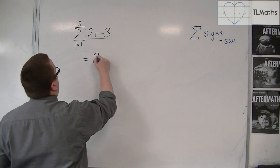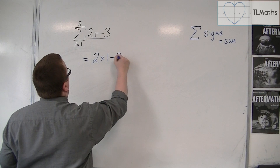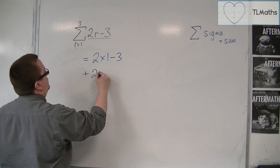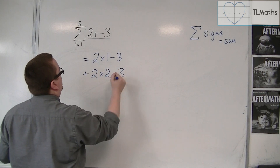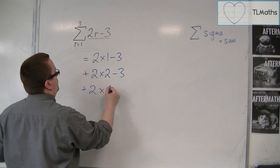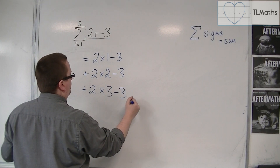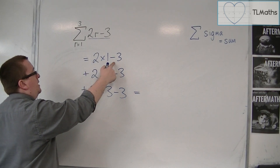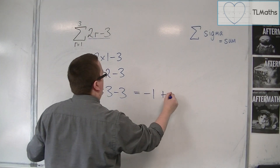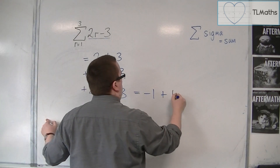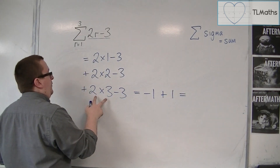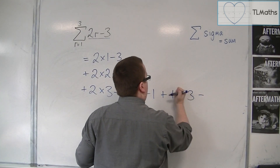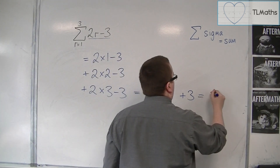So I will have 2 times 1 take away 3 — that's substituting in 1. Then I substitute in 2, so 2 times 2 minus 3. And then I substitute in 3. So I've got 2 take away 3, which is minus 1, plus 4 take away 3, which is 1, plus 6 take away 3, which is 3. And that gives me 3.